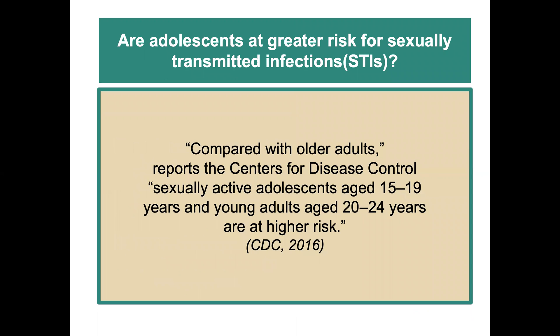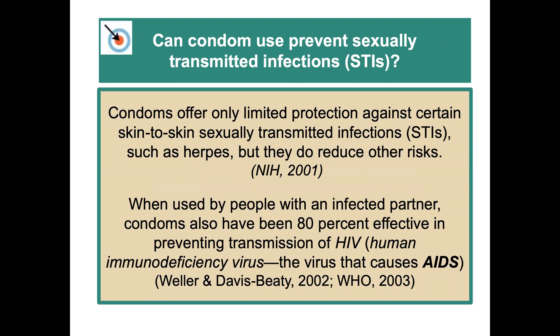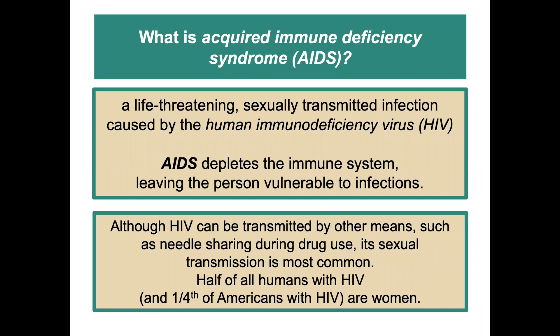Are adolescents at greater risk for sexually transmitted infections? Compared to older adults, reports from the CDC indicate that sexually active adolescents aged 15 to 19 and young adults aged 20 to 24 are at higher risk. Condoms offer only limited protection against certain types of infections, but for some others they do not reduce risk. When used with an infected partner, condoms have been shown to be 80% effective in preventing HIV transmission — the virus that causes AIDS. AIDS is a life-threatening sexually transmitted infection caused by the HIV virus that depletes the immune system and leaves the person vulnerable to infections.